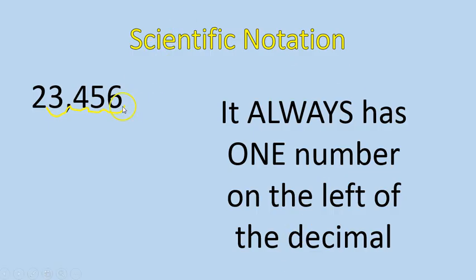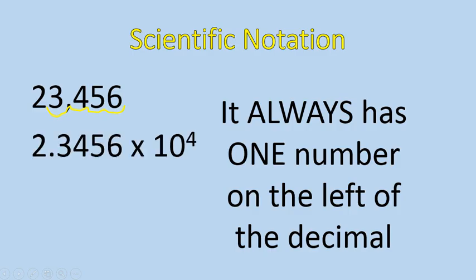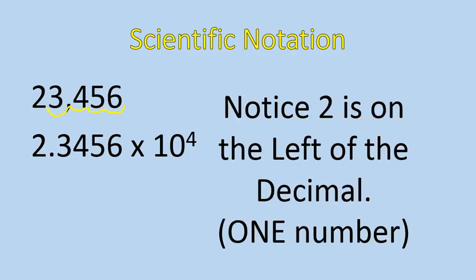I'm going to start here and shift my decimal until I have only one number on the left — in this case, that would be a 2. And I count how many places it moved: it moved four places. So I would have times 10 to the power of 4, giving me 2.3456 times 10 to the power of 4. That's now written in scientific notation. Notice it has one number on the left of the decimal — in this case, that number is a 2.